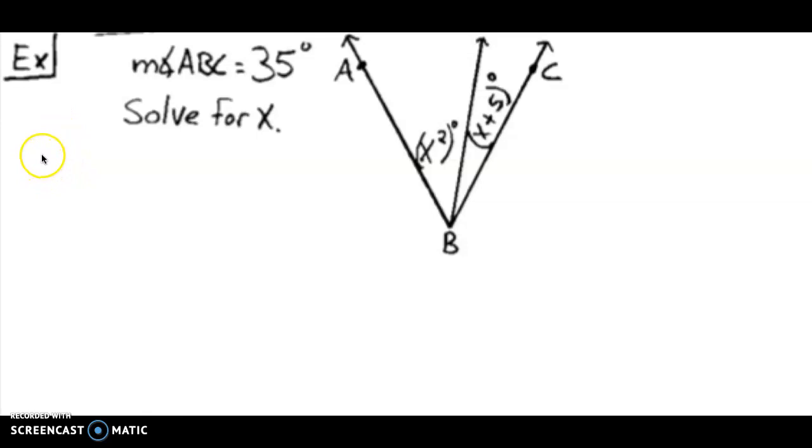All right, so same idea. We're going to take this angle of x squared and add it to the other angle of x plus 5 to equal the whole thing, which you're told right here, measure of angle ABC is 35.